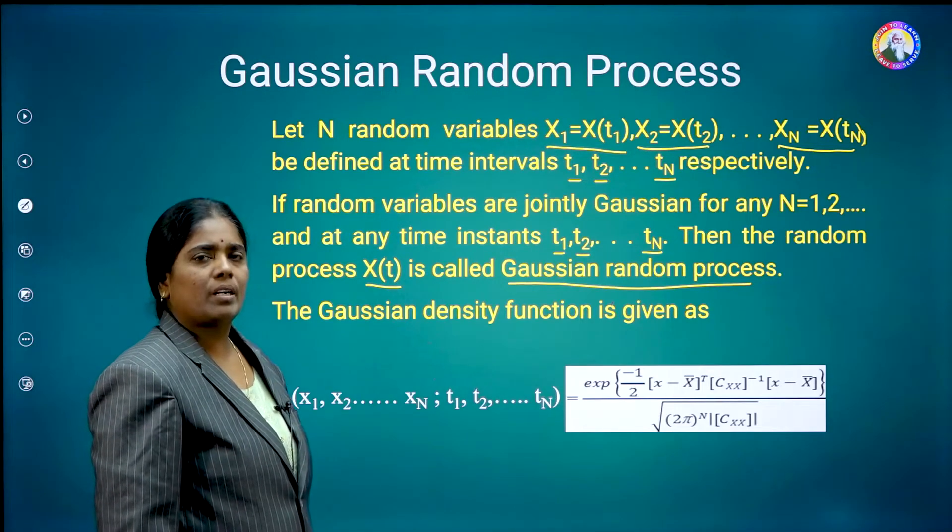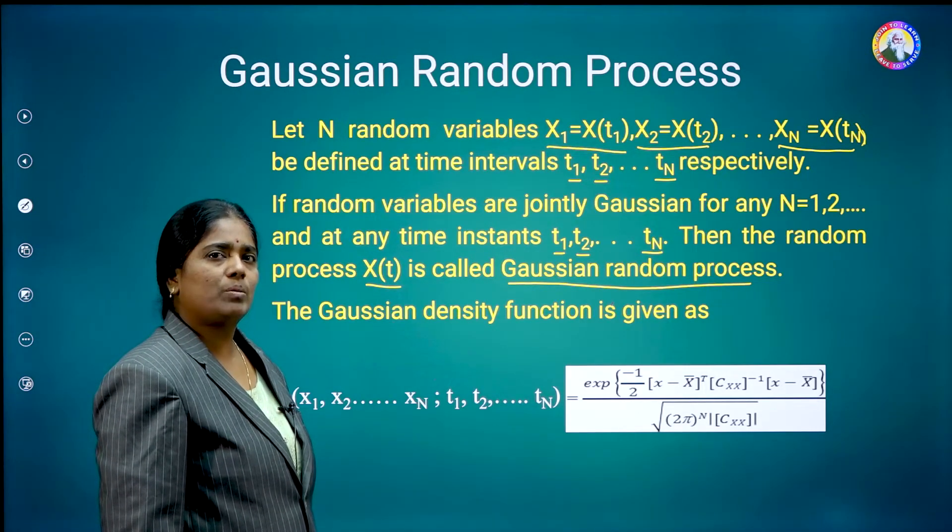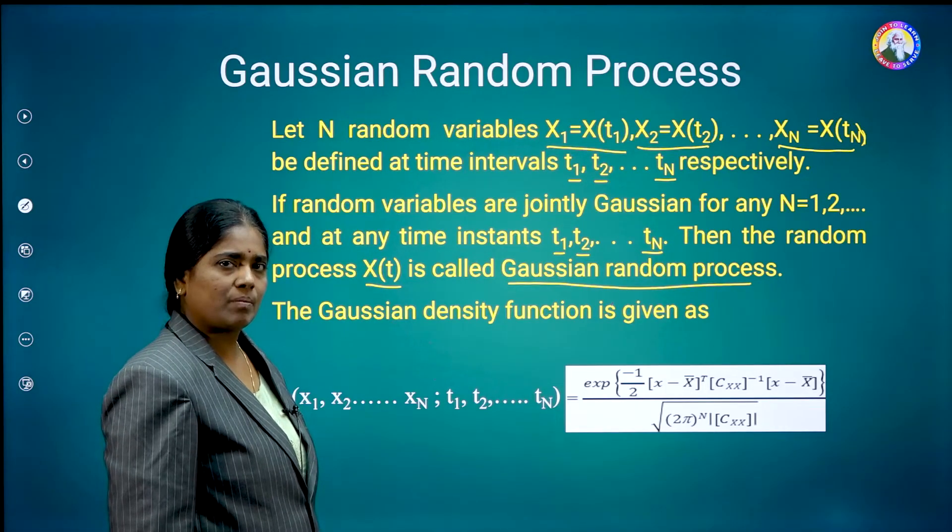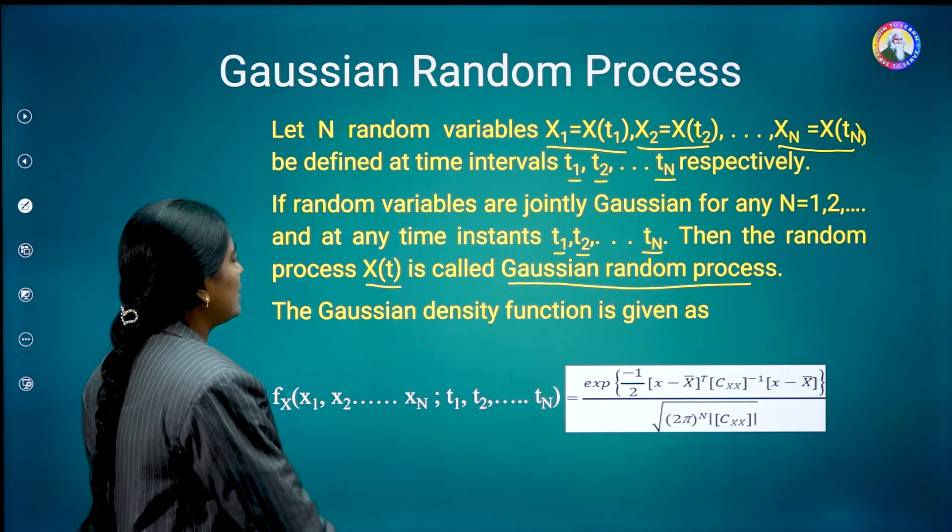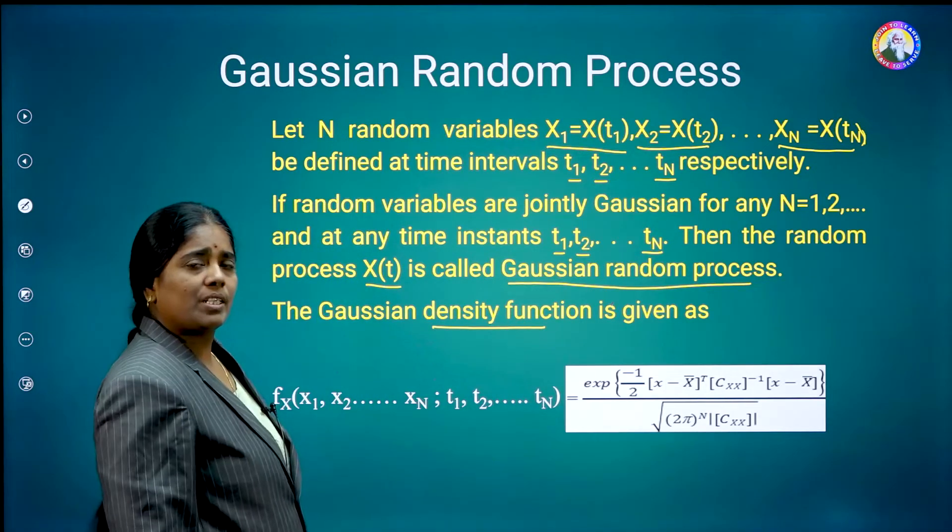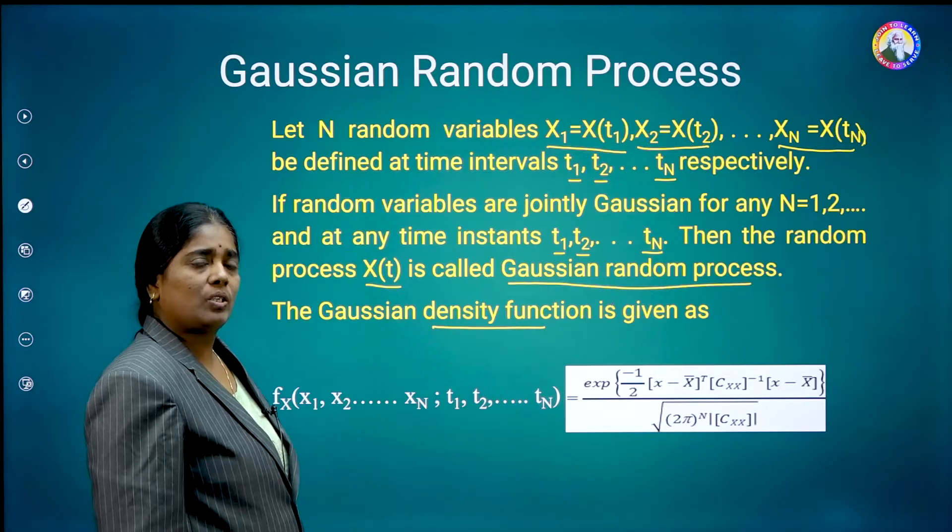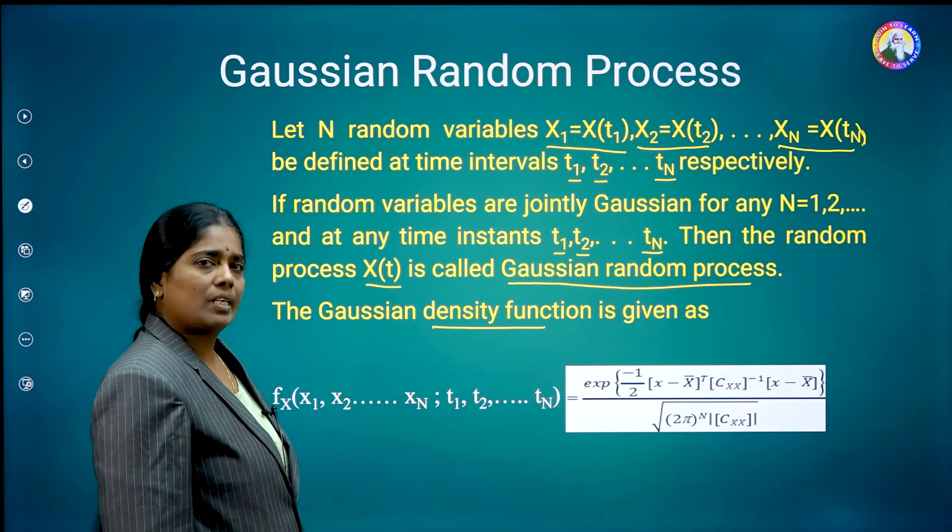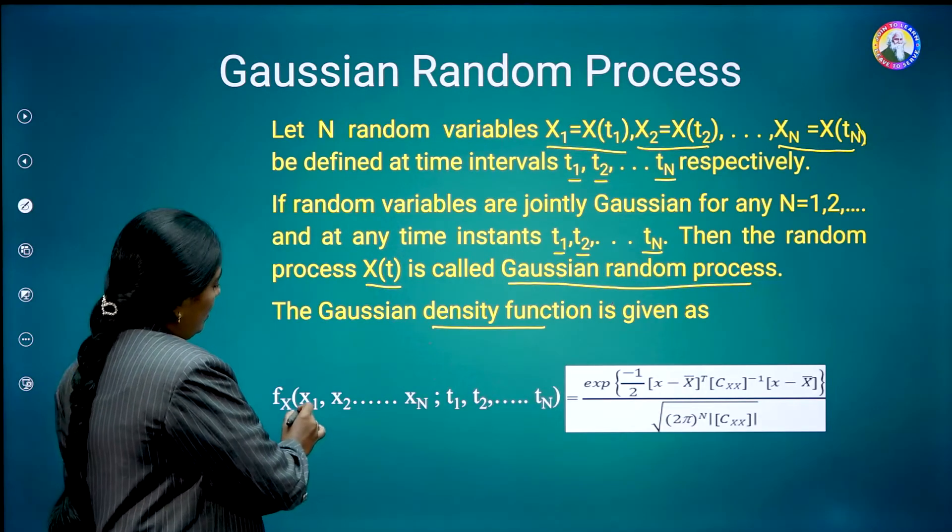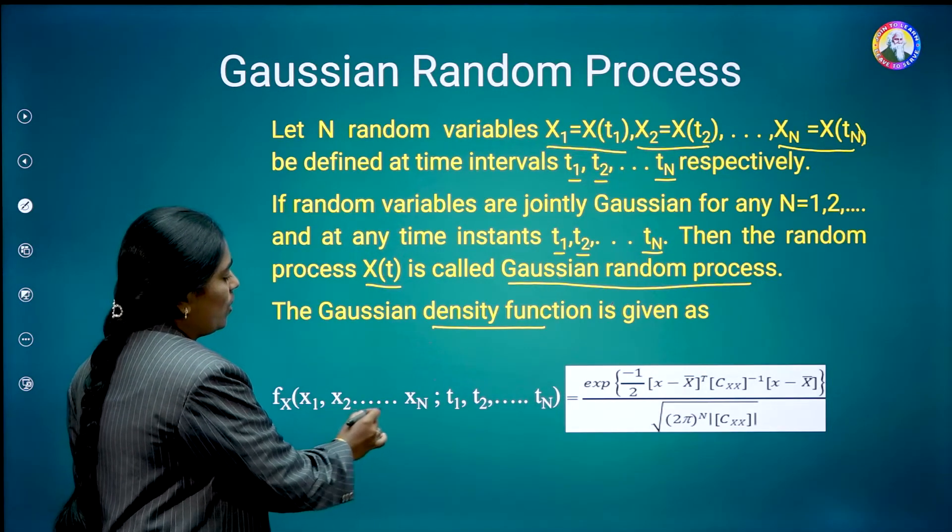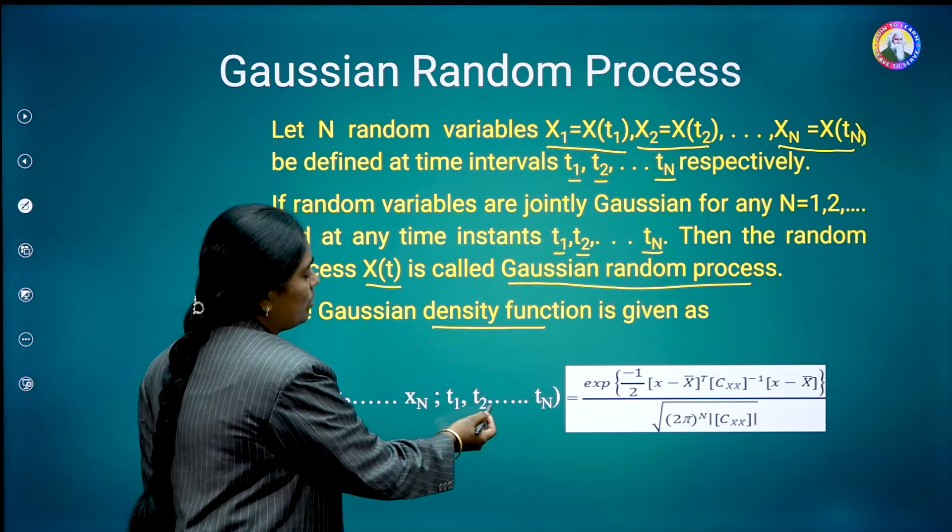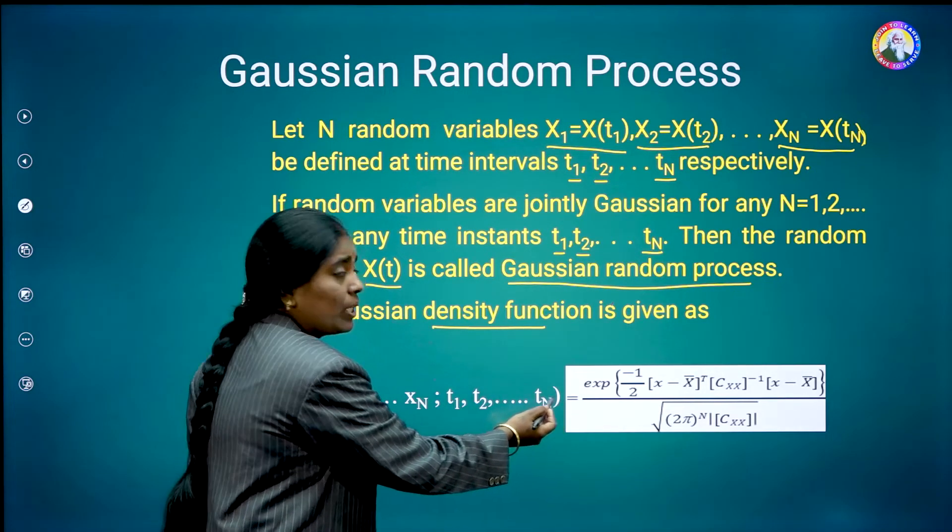For any random variable or random process, we will describe by using its corresponding density function or distribution function. Now, for this case, by using the probability density function, for the case of n-dimensional Gaussian random process, the expression is given as small fx of x1, x2, so on, xn, semicolon, t1, t2, so on, tn is equal to